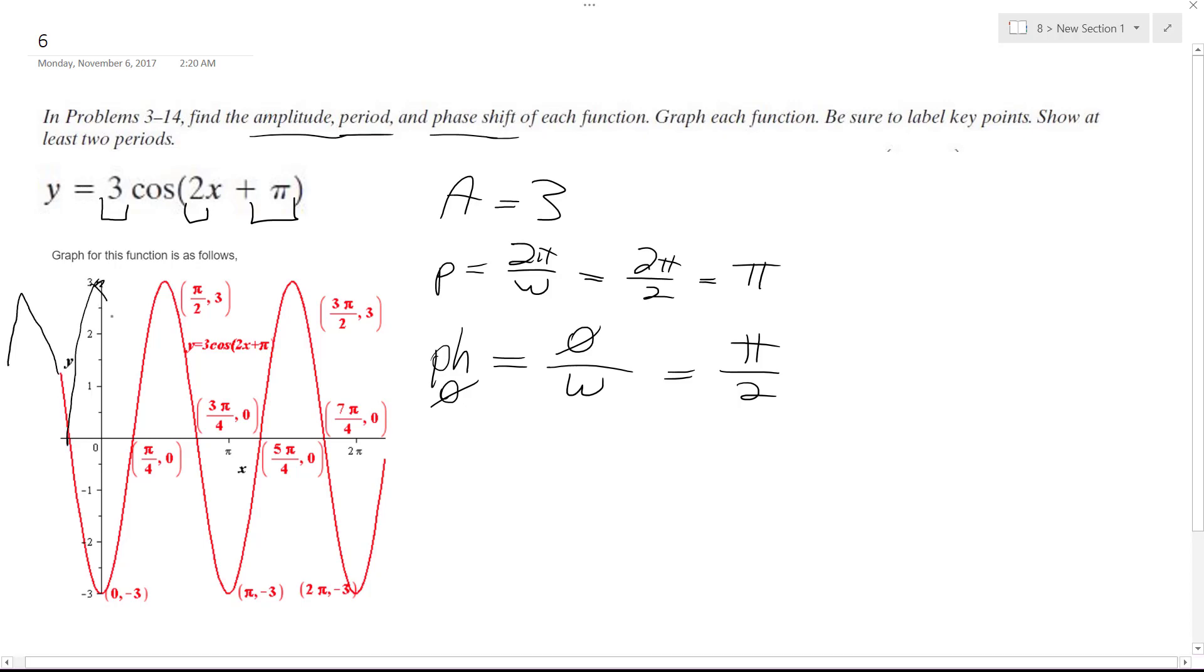Because it's shifting over pi over 2, which is half, it's going to fully go bounce pi over 2.